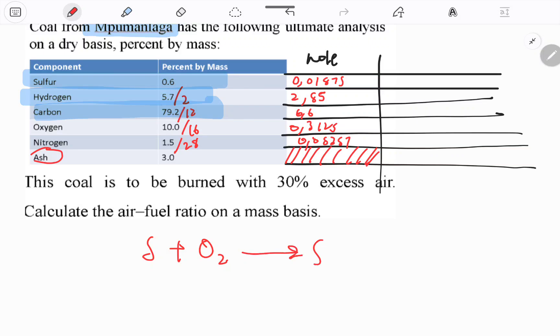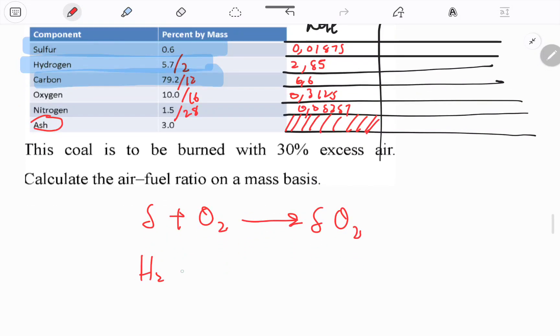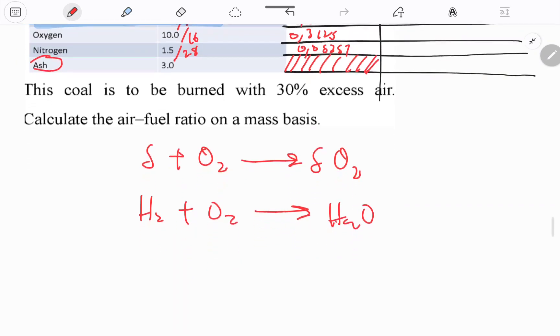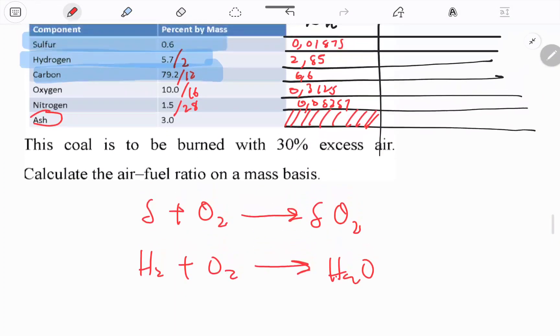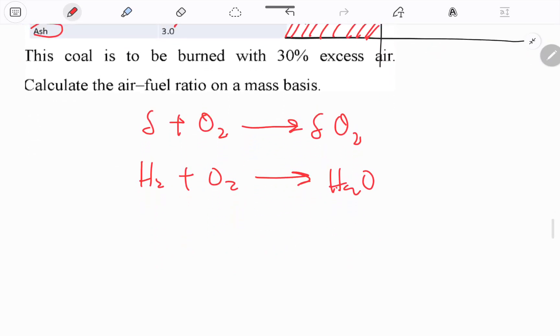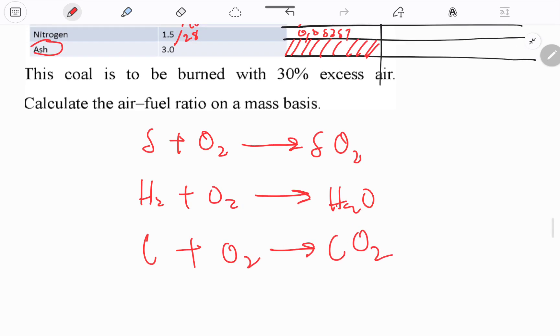Carbon also. So those three. So we have S + O₂ → SO₂, 2H₂ + O₂ → 2H₂O, and C + O₂ → CO₂.